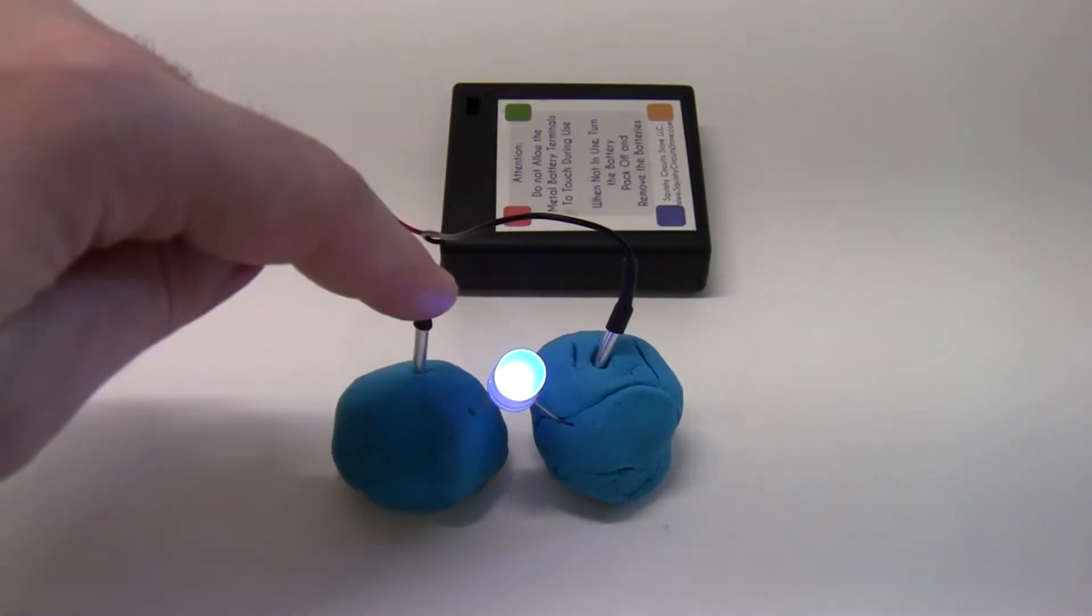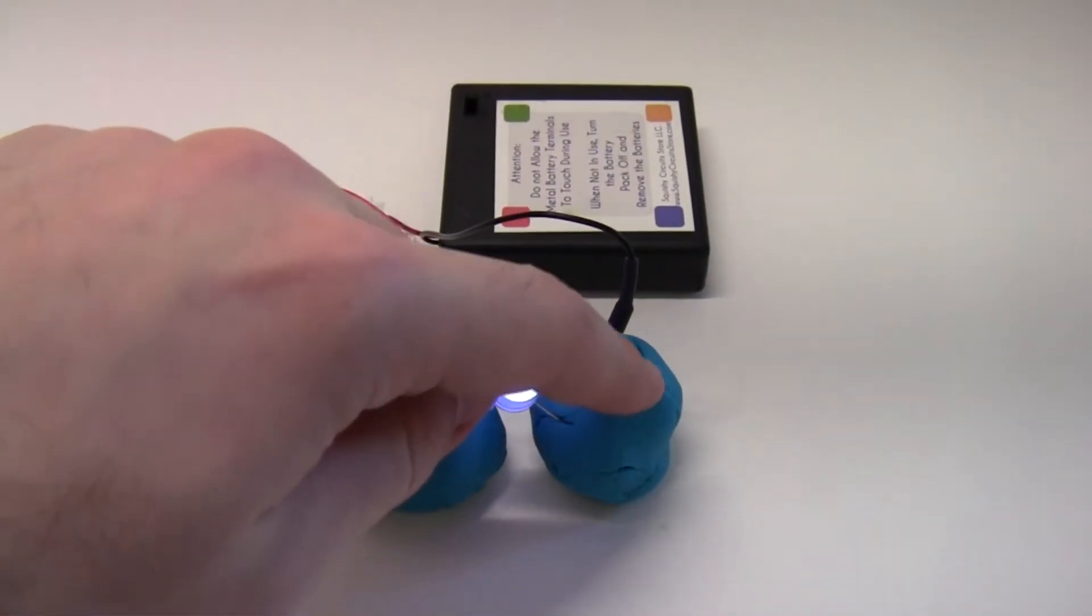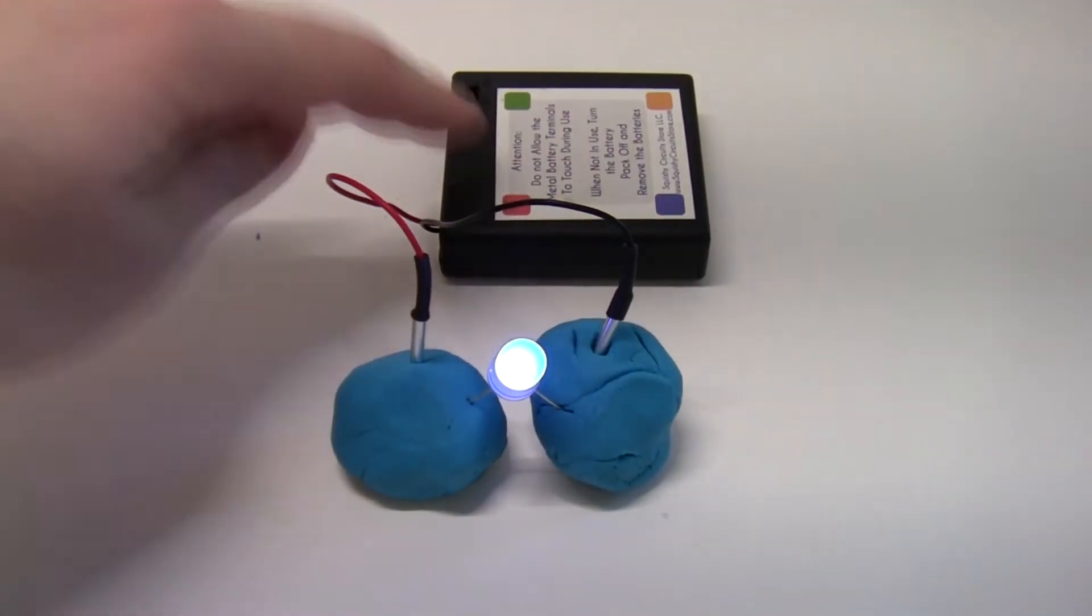This allows electricity to flow from the battery pack through the red wire, through the Play-Doh and the LED, through the black wire, and back to the battery pack to complete the circuit.